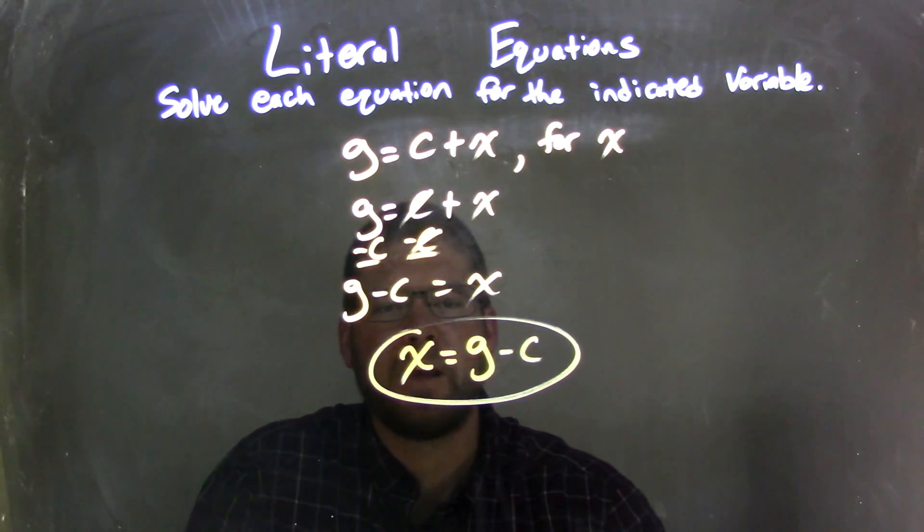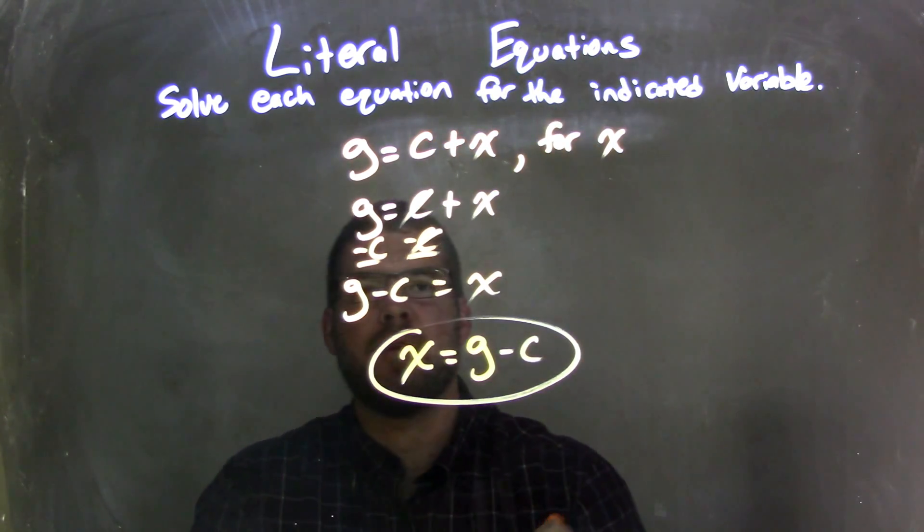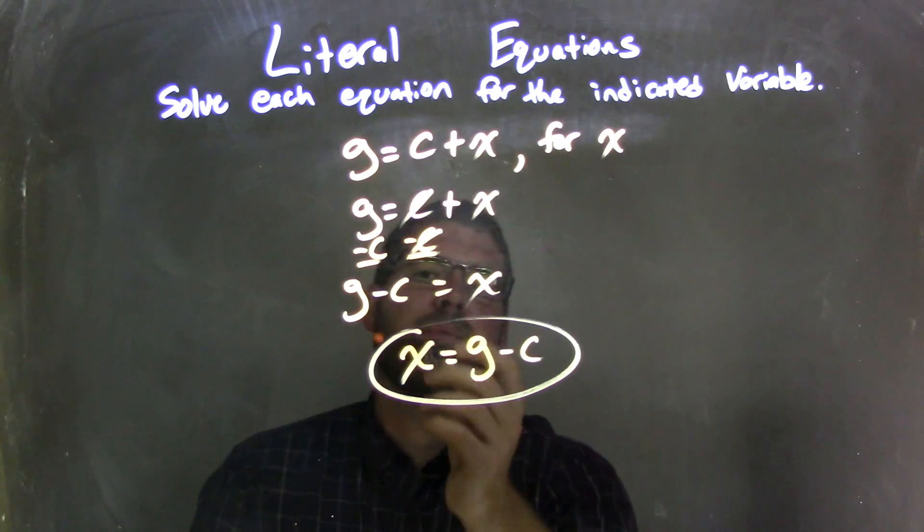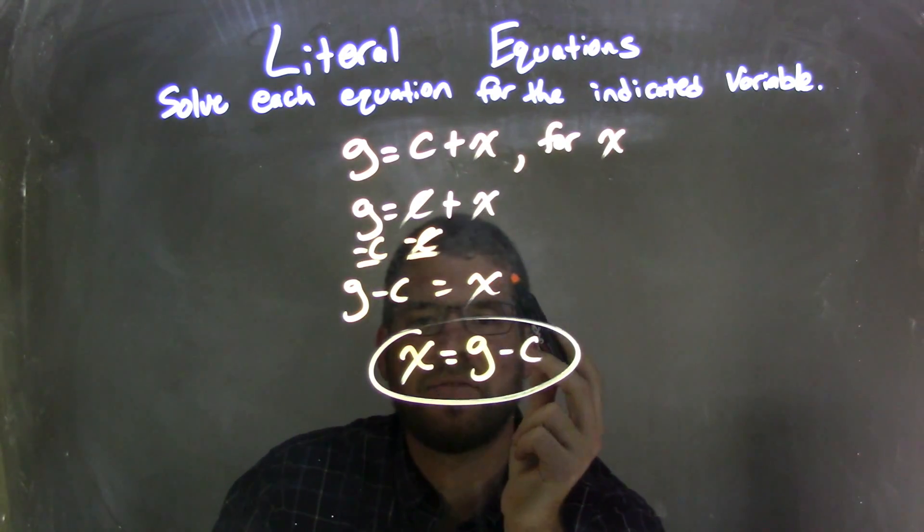So let's recap. We have g equals c plus x, and we need to solve that for x. I rewrote my equation, then I subtracted c from both sides. That left me with g minus c on the left by itself, and that is equal to x on the right.